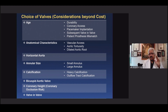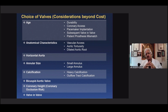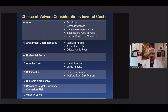Valve-in-valve is an important future consideration, though every company is working on TAV-in-TAV solutions, so looking 10-15 years ahead may be less critical. Patient-prosthesis mismatch is a huge predictor of worse long-term outcomes — supra-annular valves give less patient-prosthesis mismatch, especially in smaller anatomies and larger patients.